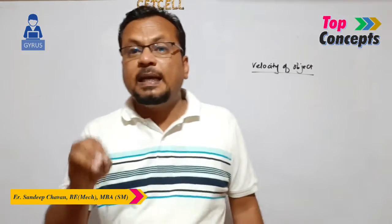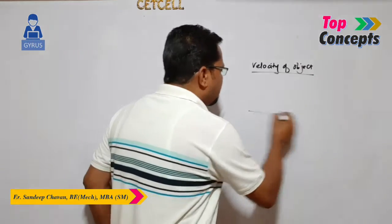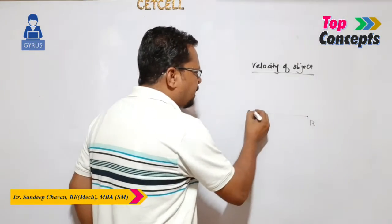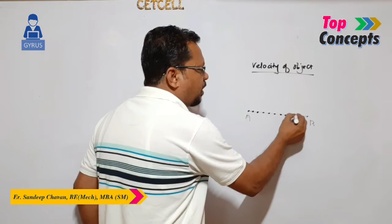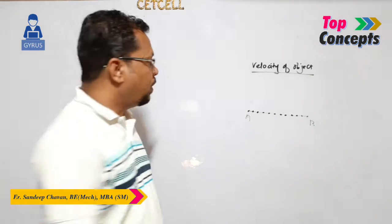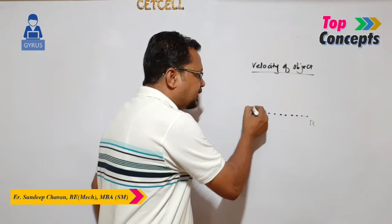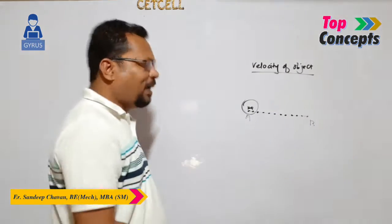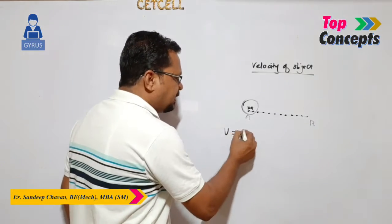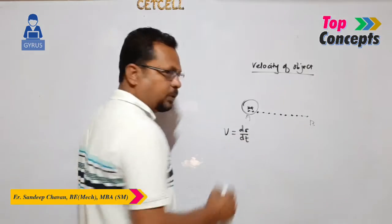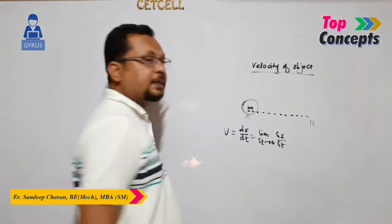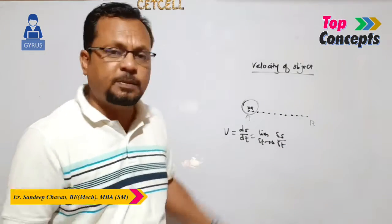This definition is called instantaneous velocity. For example, an object moves from position A to position B, but during this travel it has acquired different positions by covering small distances. If we are interested in knowing the velocity at a specific instant, that is called instantaneous velocity. Instantaneous velocity is the derivative of displacement with respect to time — a very small incremental change in displacement with respect to a small interval of time.